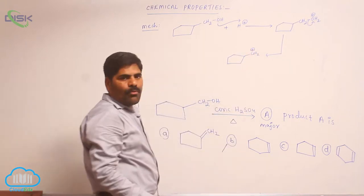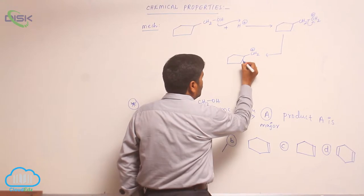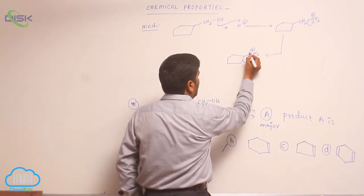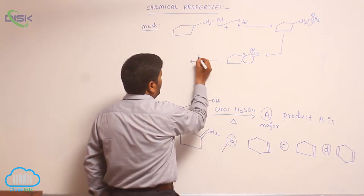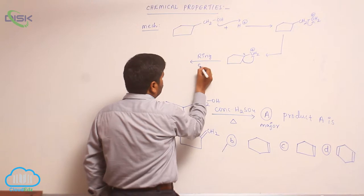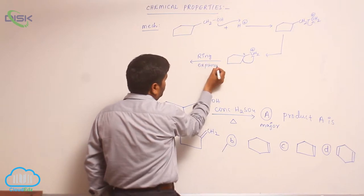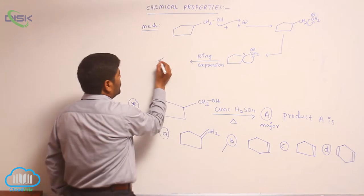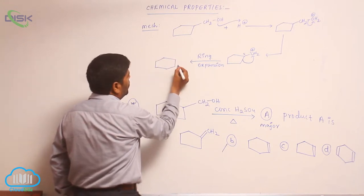The 1° carbocation is unstable, so therefore immediately ring expansion takes place — a 1,2-shift. Ring expansion takes place, and due to this ring expansion, the positive charge is carried on the second carbon.